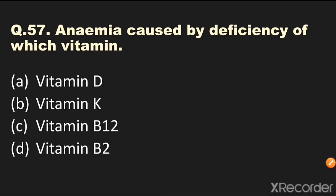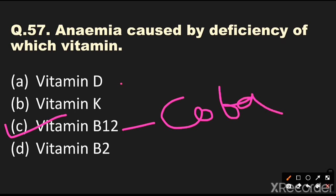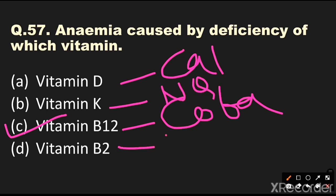Question number 57: Anemia is caused by deficiency of which vitamin? Options are vitamin D, vitamin K, vitamin B12, or vitamin B2. The answer is vitamin B12, also called cobalamin. Vitamin D is calciferol, vitamin K is naphthoquinone, and vitamin B2 is riboflavin.